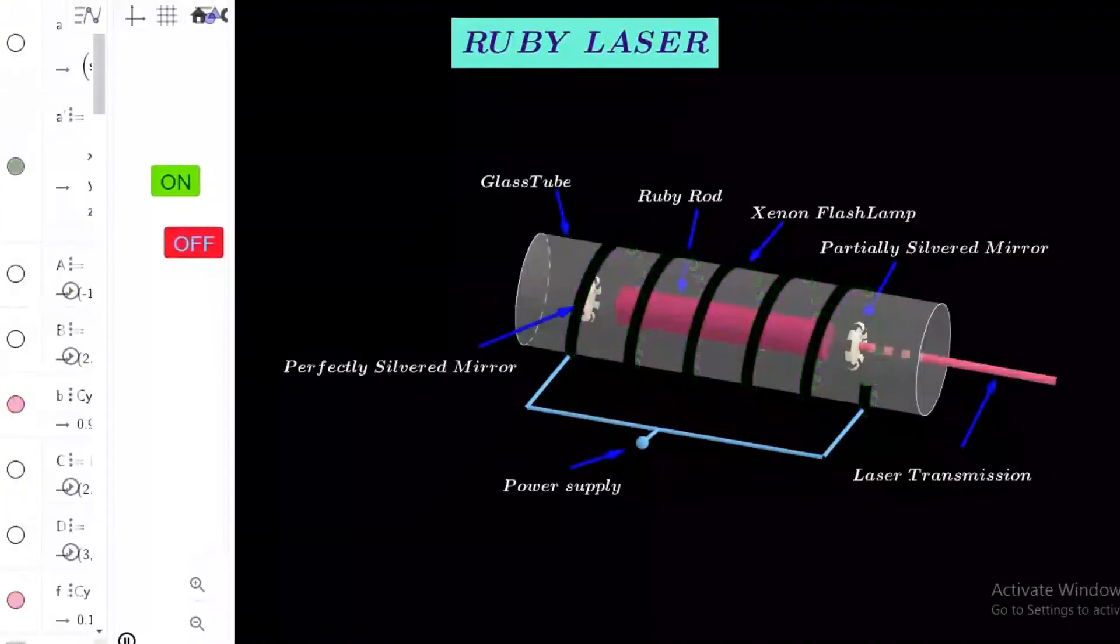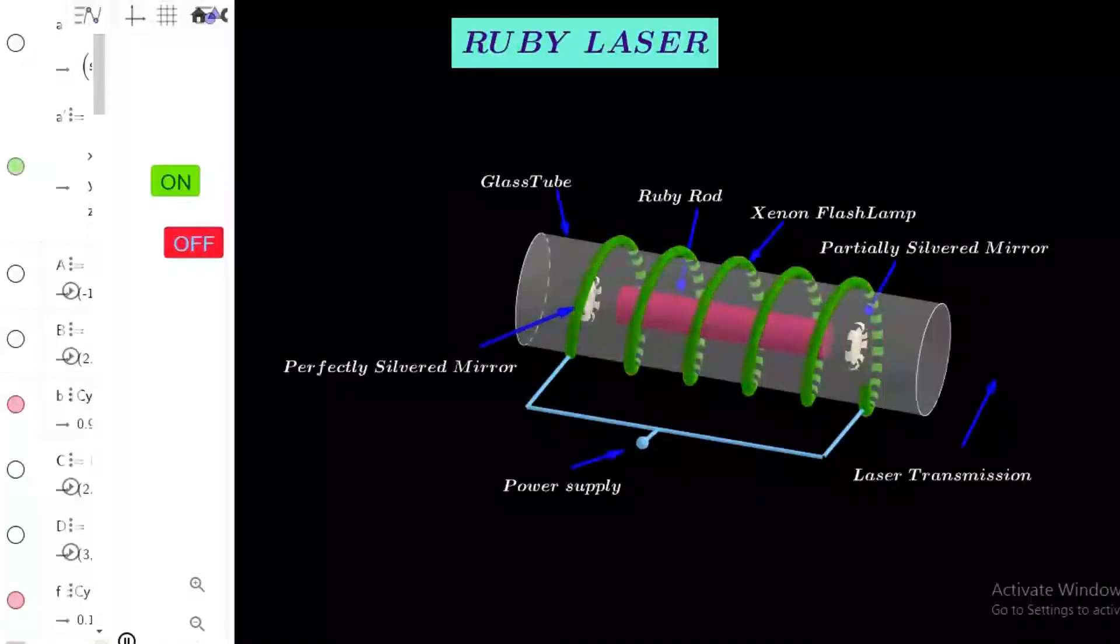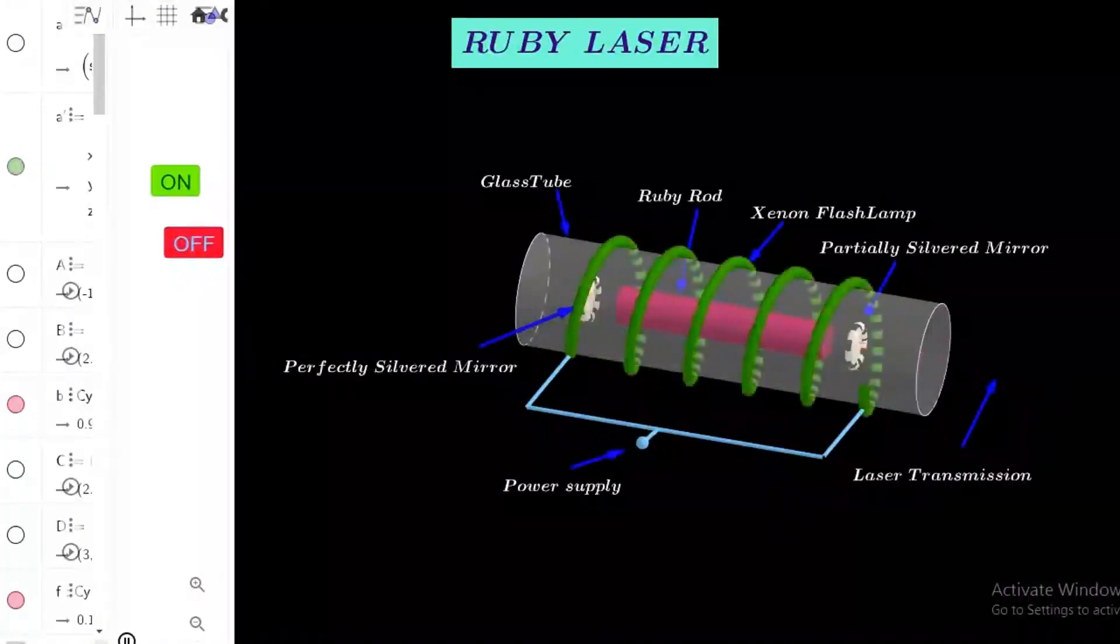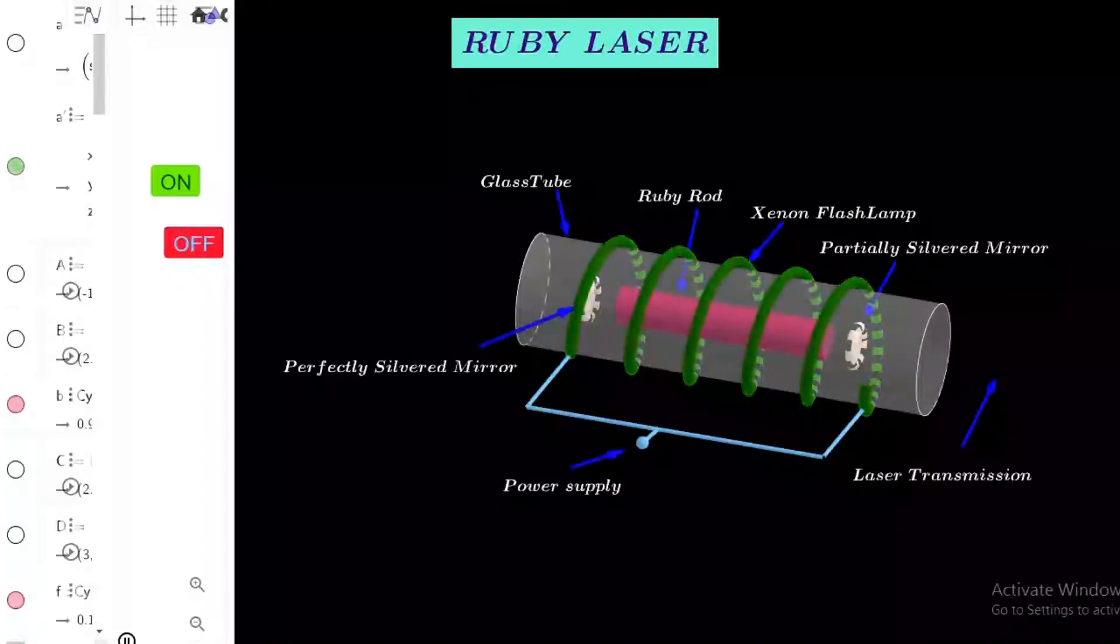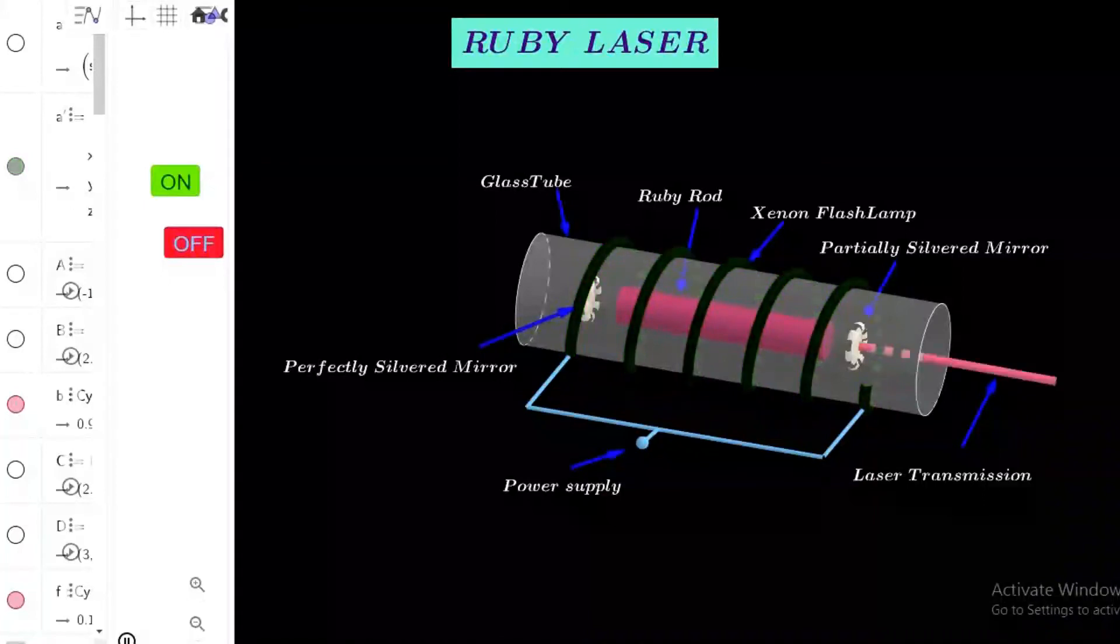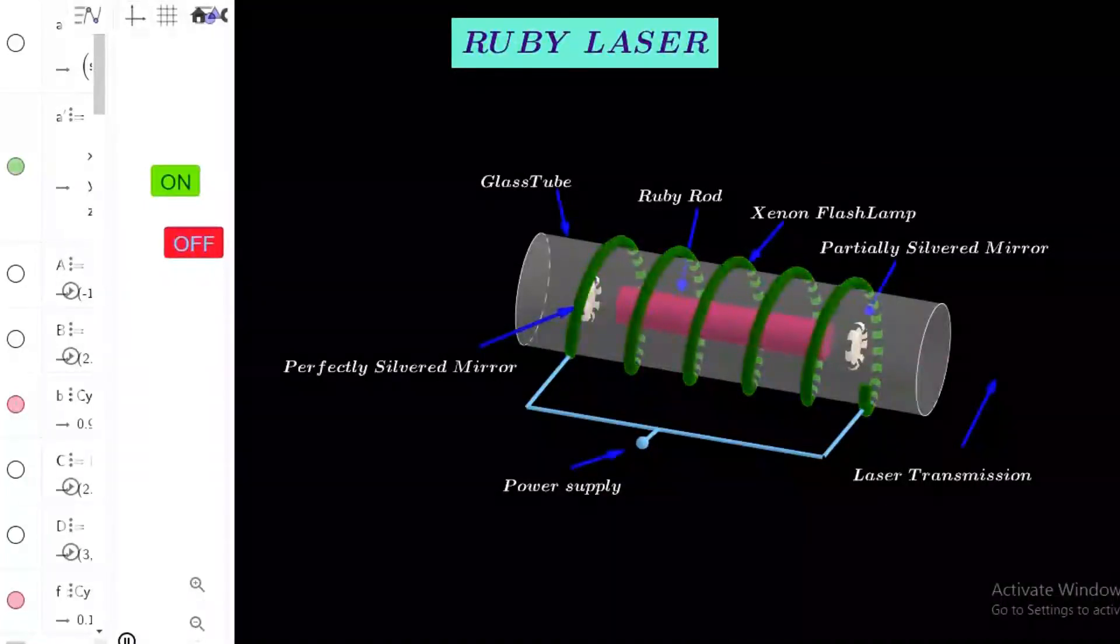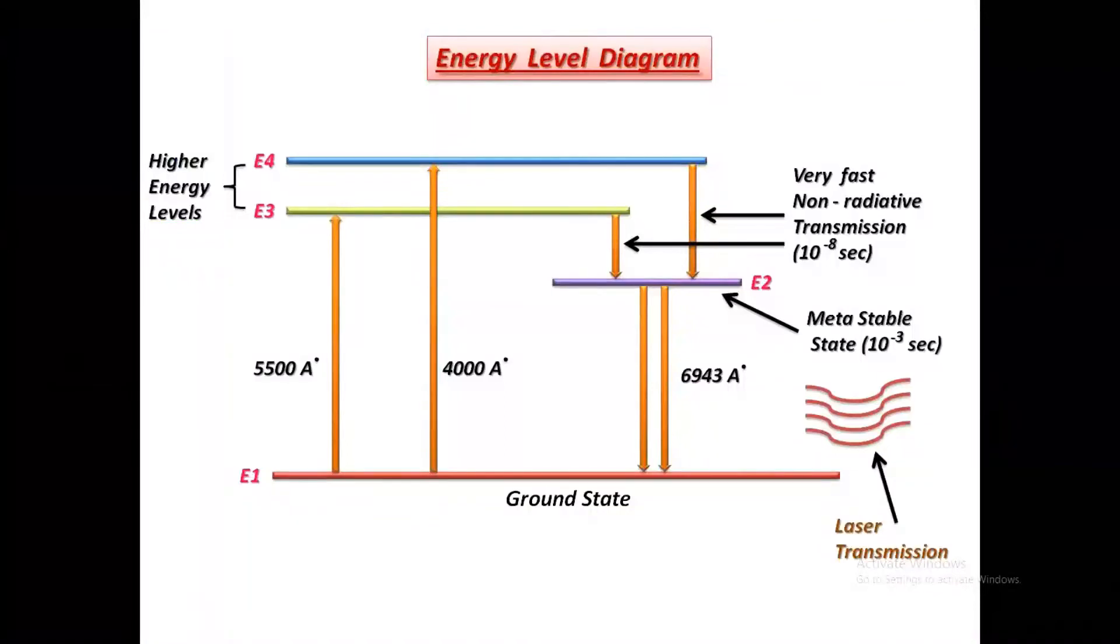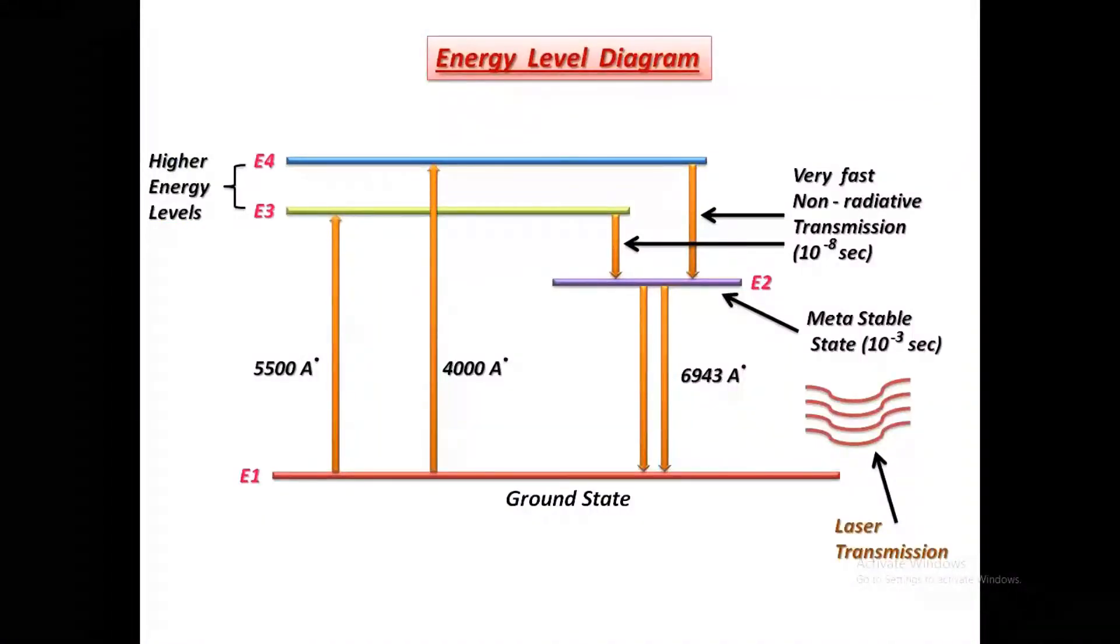Now let's study the working of this laser. The flash tube fires and injects the light into the ruby rod. The chromium ions absorb light of wavelength 5500 angstrom and 4000 angstrom and get excited to higher energy level. So these are energy level diagrams. The excited levels E3 and E4 are highly unstable having lifetime of 10 to the power minus 8 seconds. But E2 is a metastable state having lifetime 10 to the power minus 3 seconds. So the chromium ions make rapid transition from E3 and E4 to E2.